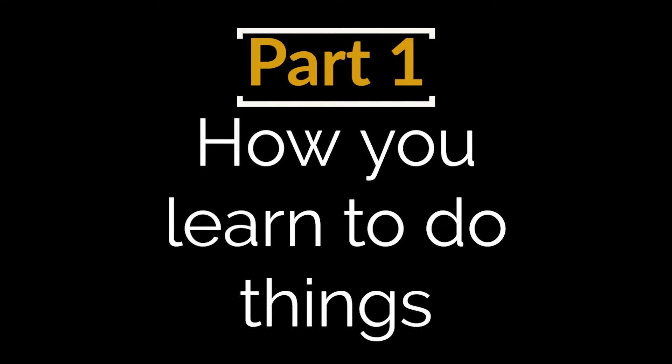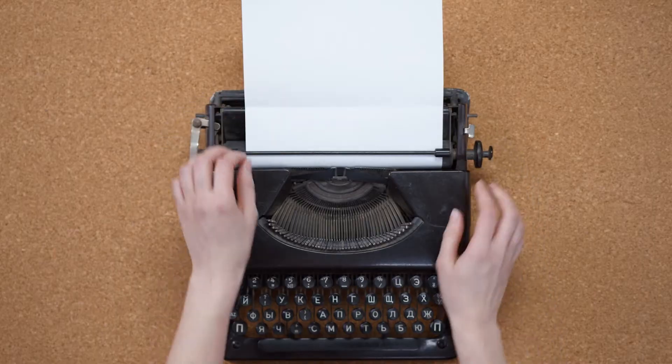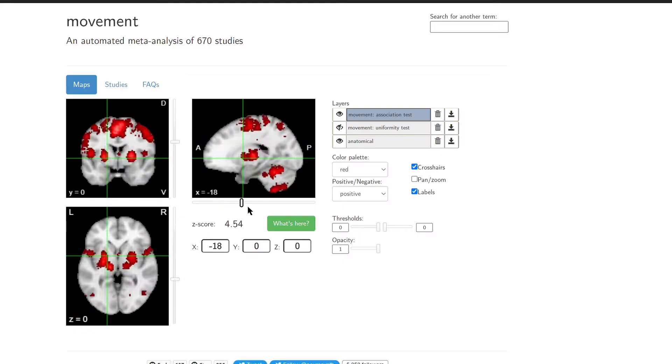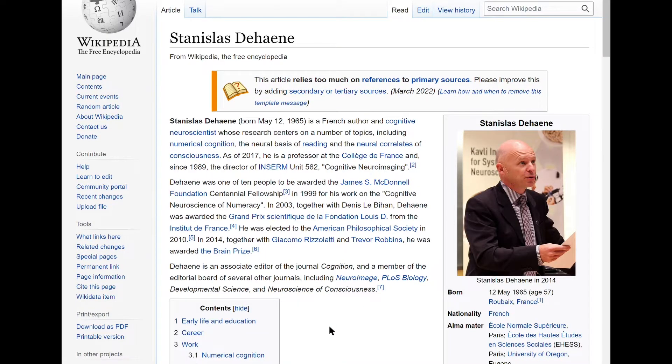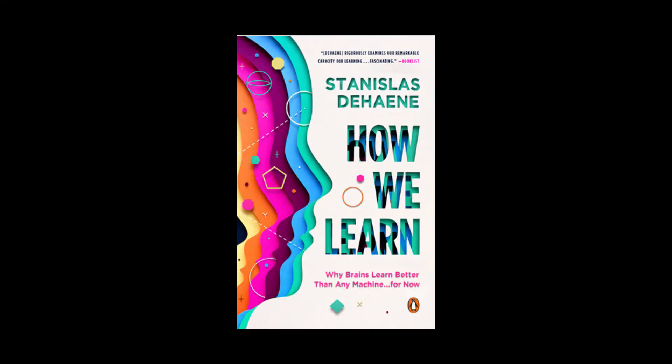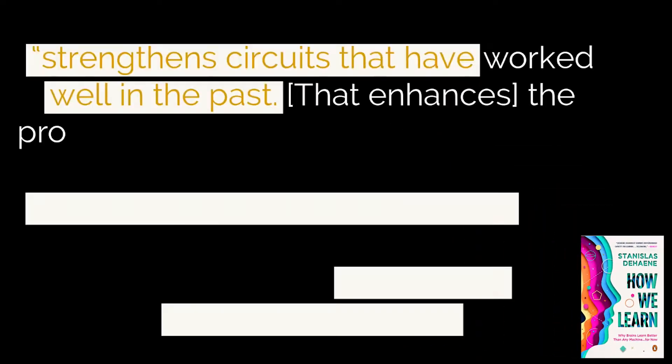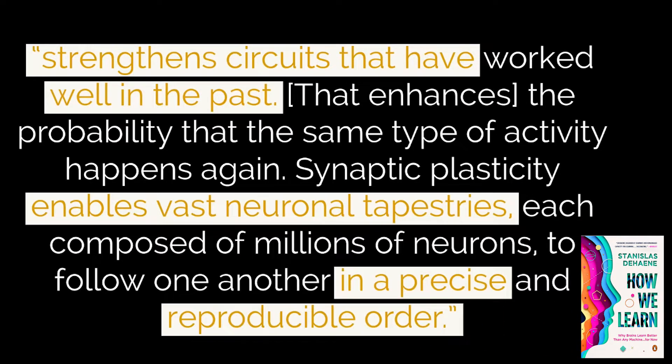Now back to neuroplasticity. Through the lens of neuroplasticity, how do you learn to do something complicated, like playing an instrument, skating on ice, or typing on a keyboard? The answer is that synapses in brain areas concerned with movement, perception, and other relevant functions change in response to repeated practice. As the neuroscientist Stanislas Dehaene puts it in his 2020 book How We Learn, this kind of repetition "strengthens circuits that have worked well in the past."